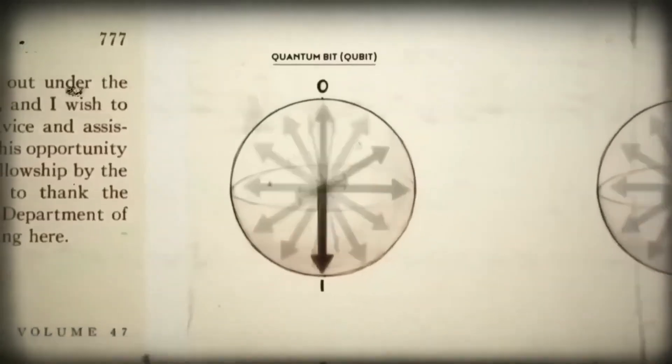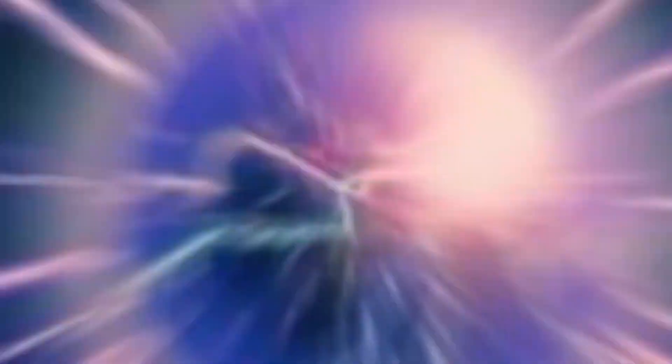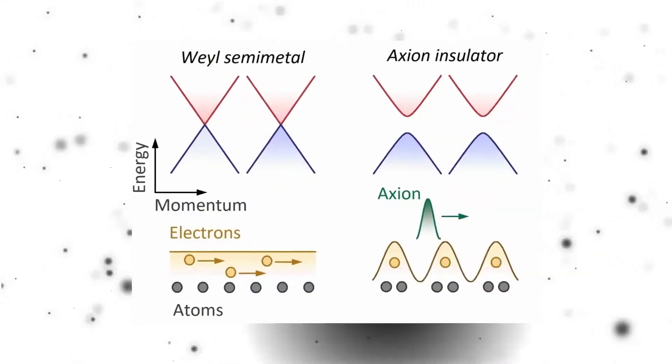Since quantum computers are designed to harness and manipulate quantum states with extreme precision, they might be capable of detecting these hidden patterns. There is also a growing theory that quantum entanglement, the phenomenon where two particles become mysteriously linked across vast distances, could be influenced by the presence of axions.